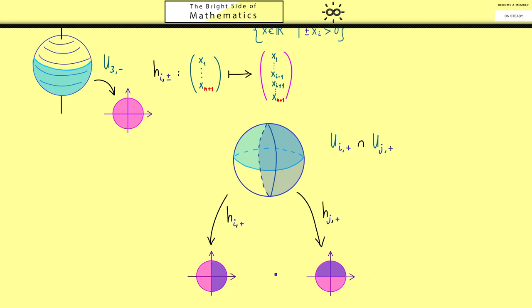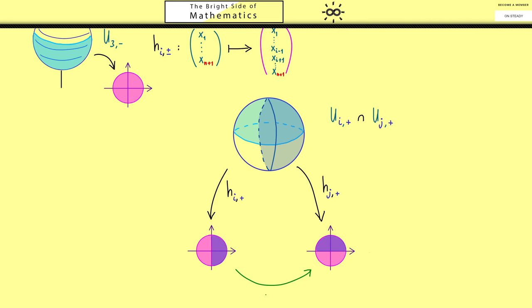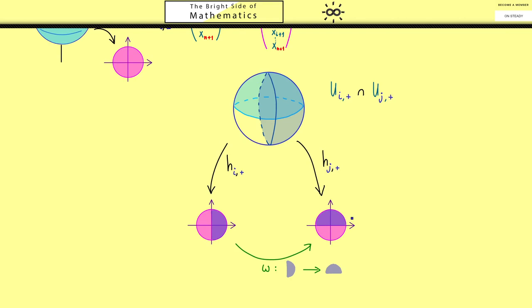And now please recall the transition map we are interested in is the map that sends this half disk to this half disk. And usually we call such a transition map ω. It's the map from left to right which means first we apply h_i^+ inverse and then h_j^+. So we have this composition of the two maps restricted on that domain. And now I think it's helpful to calculate this map for the example we have sketched here.